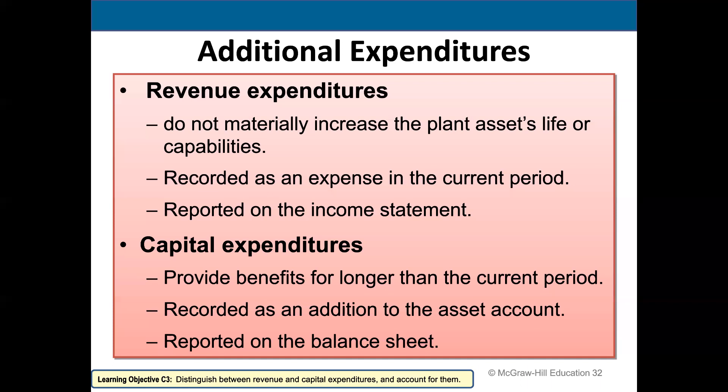Capital expenditures, on the other hand, provide benefits for longer than the current period. If I did something that materially changed the asset and made it more useful — maybe I added a lift gate to a truck so we could use it for hauling loads in a different way, or maybe I built an addition onto a building — those benefits extend beyond the current period. We would record them as an addition to the asset account, then recalculate depreciation expense going forward based on the new cost, and report that on the balance sheet as an increase to the asset.